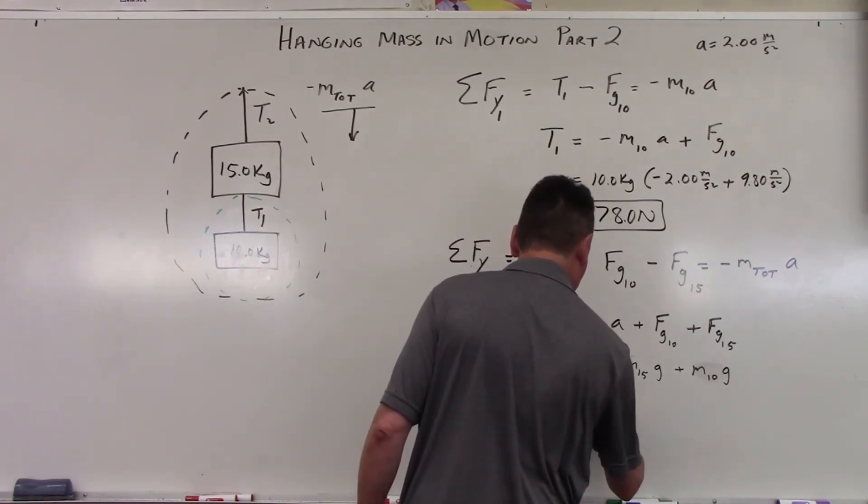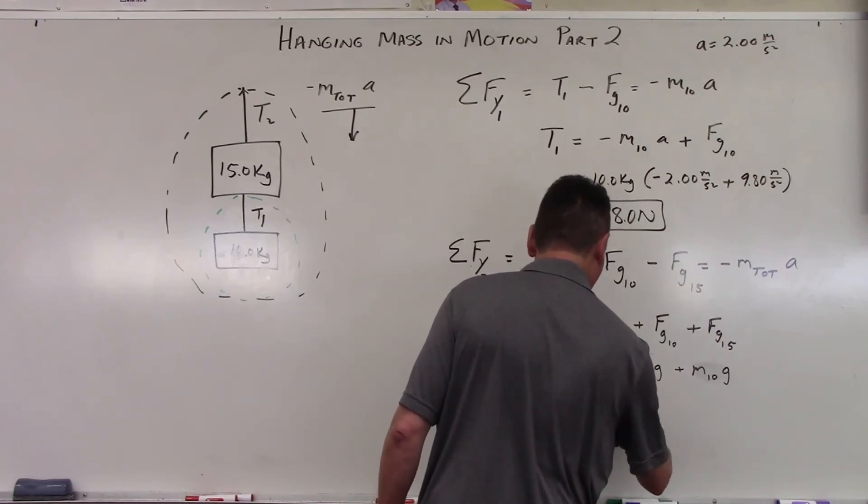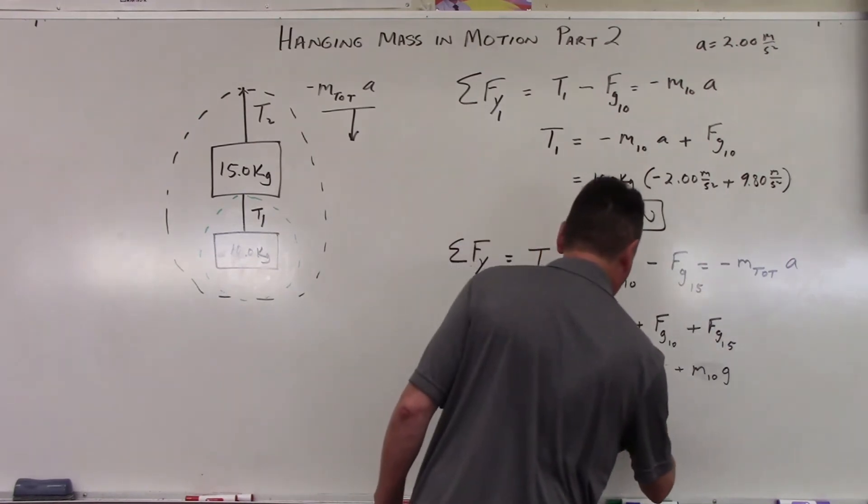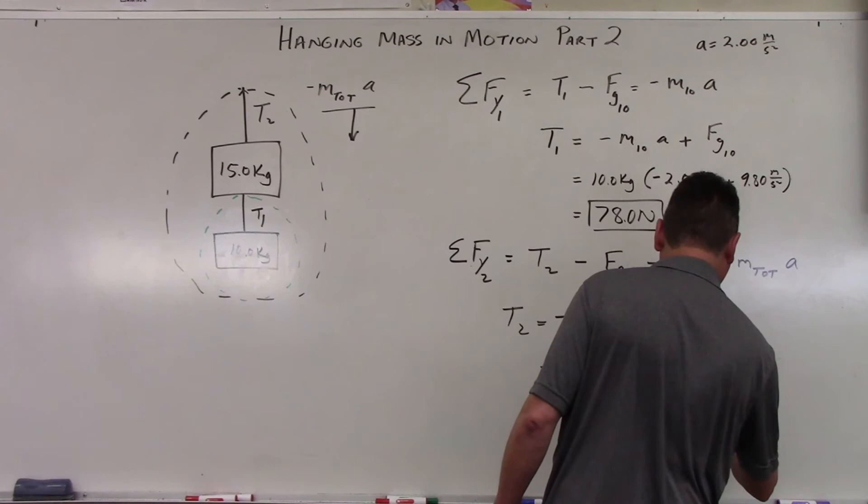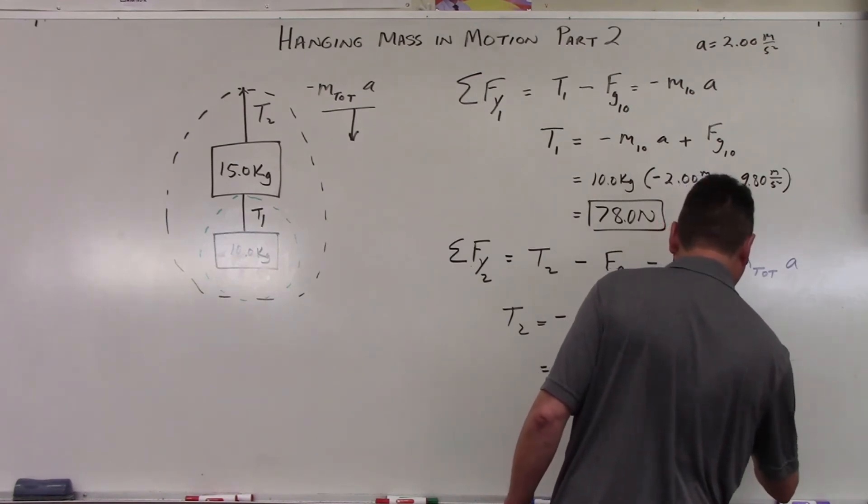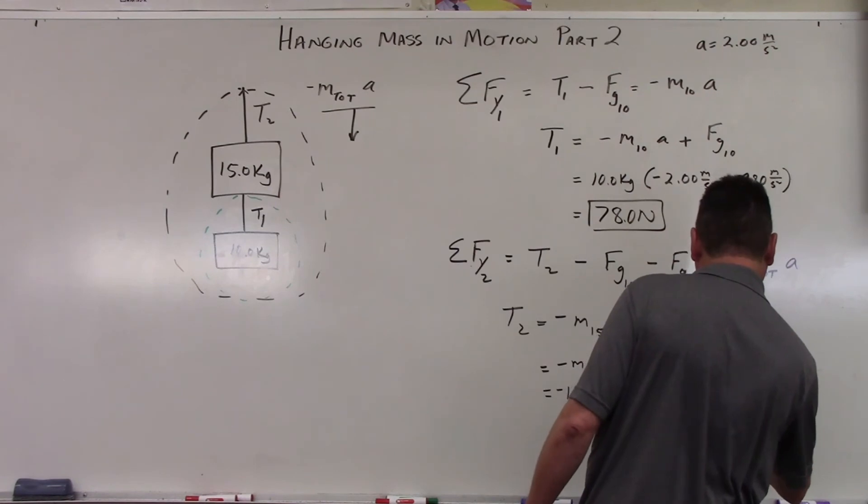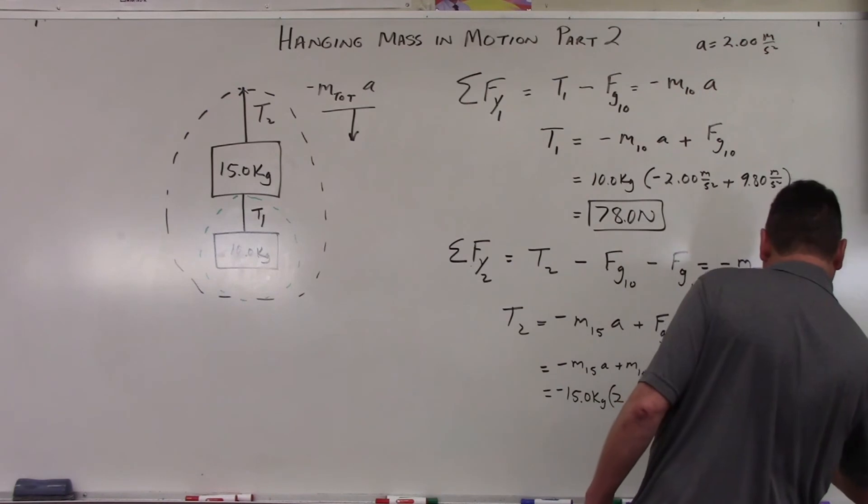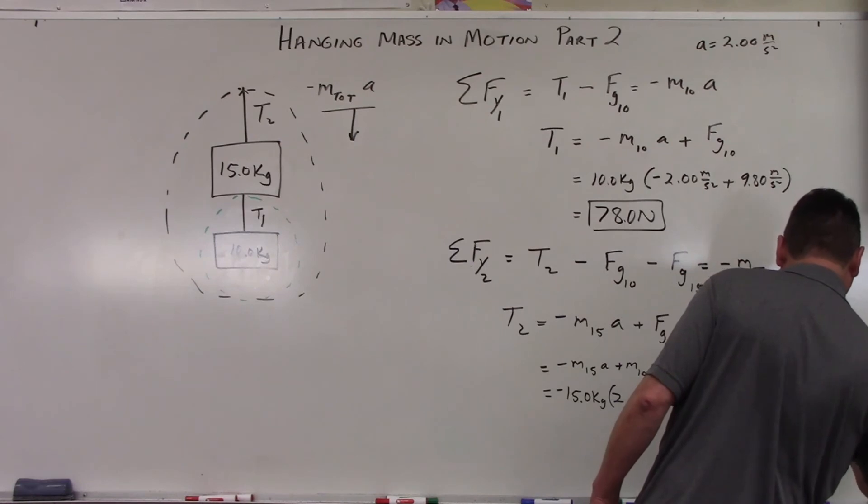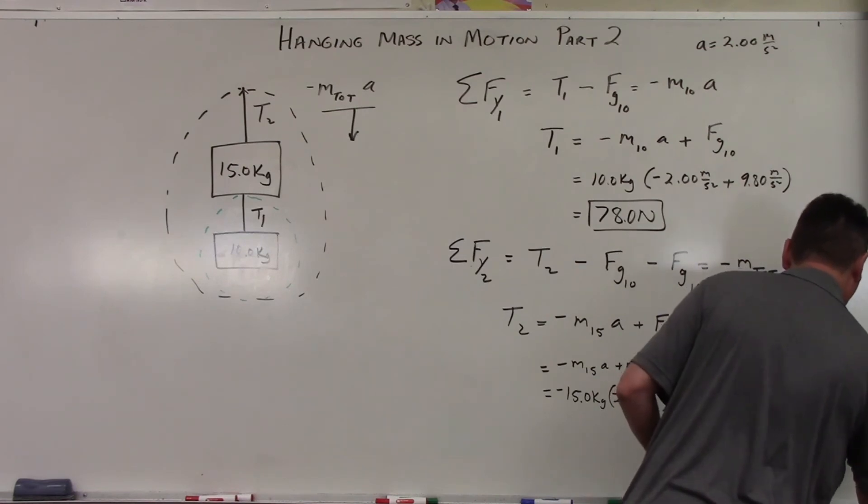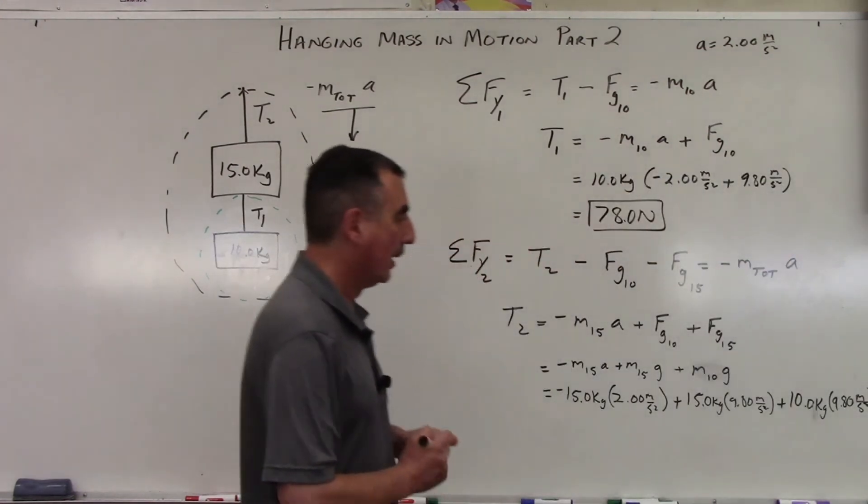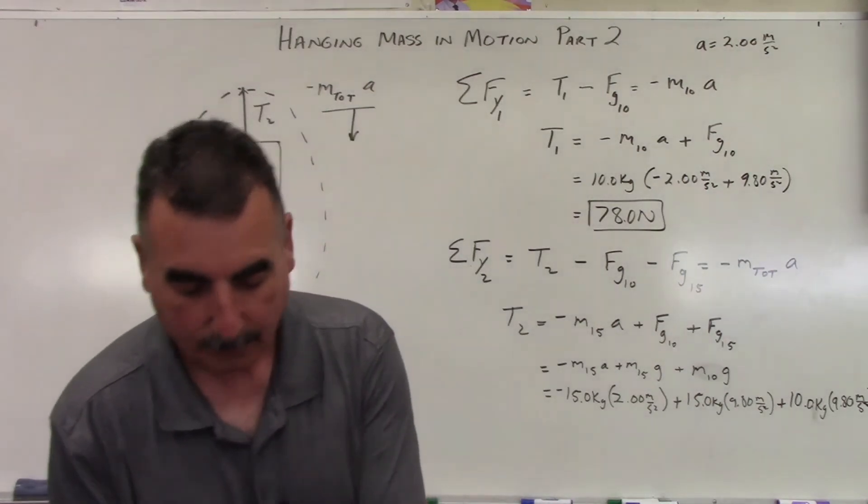I'm just going to write it all out so that it can be seen. So 15.0 kilograms times, and this is negative, 2.0 meters per second squared plus 15.0 kilograms times 9.80 meters per second squared plus 10.0 kilograms times 9.80 meters per second squared. Let's do the math.